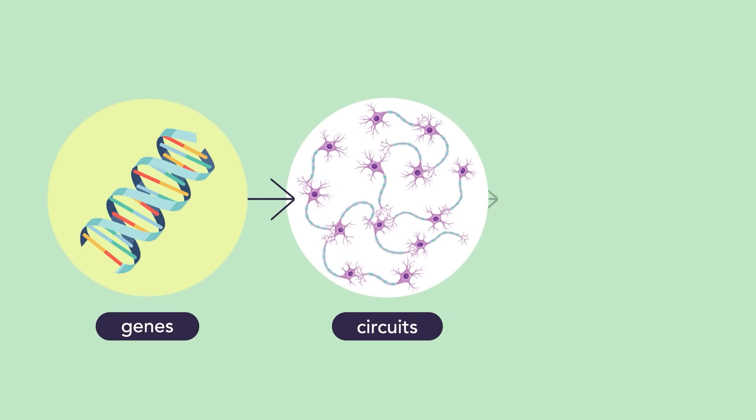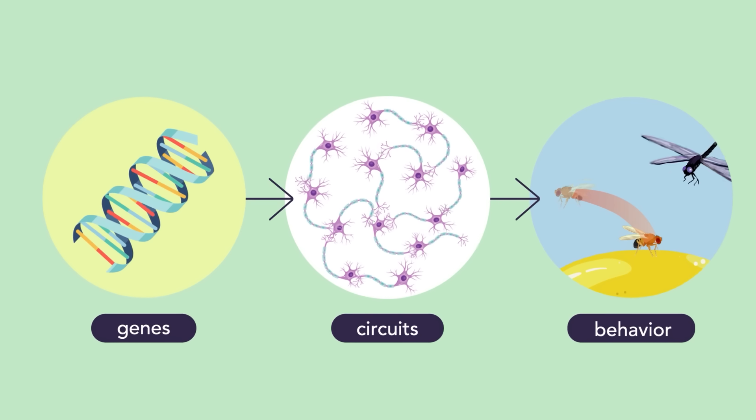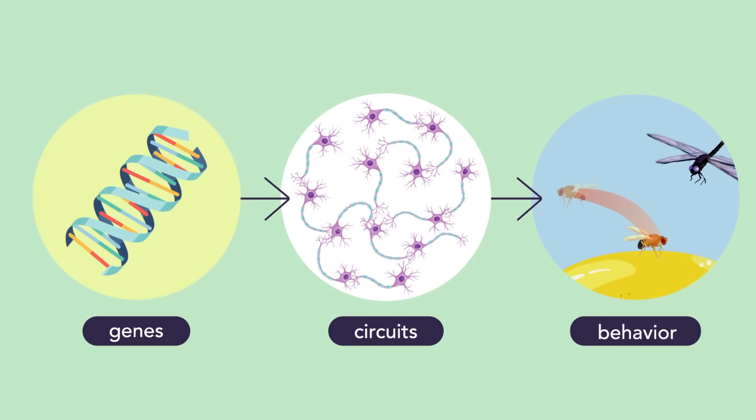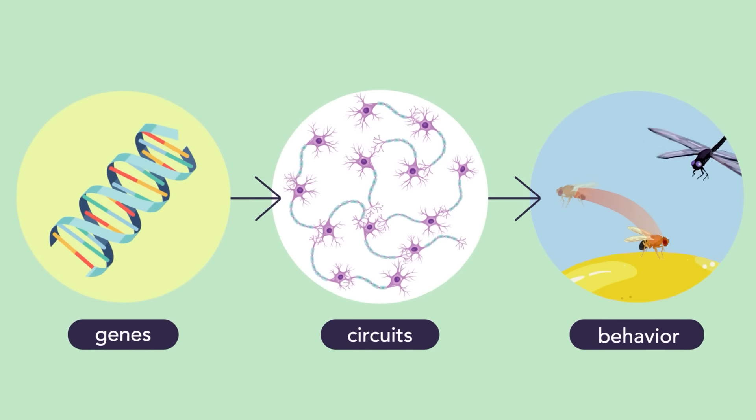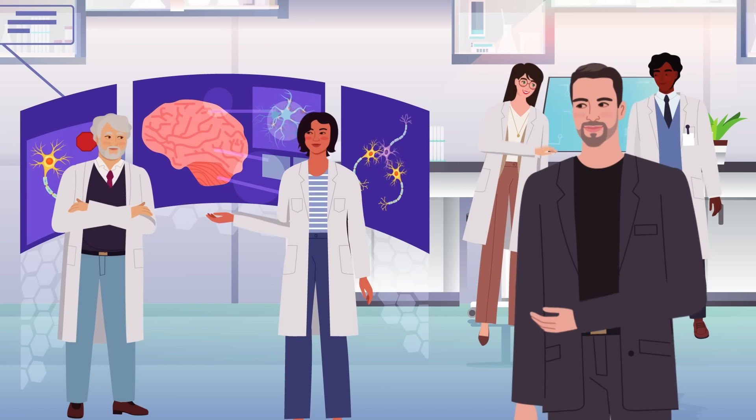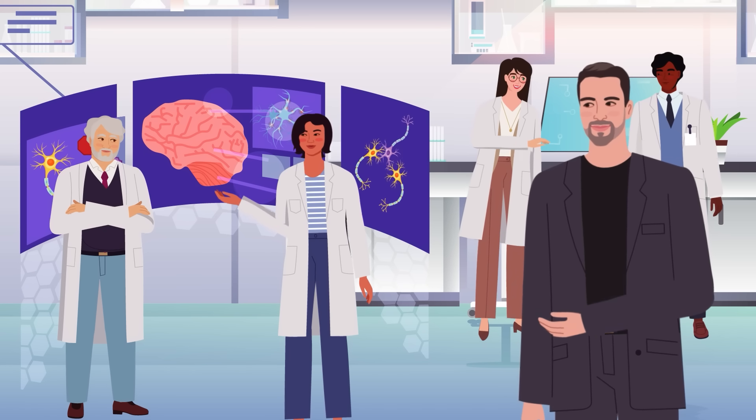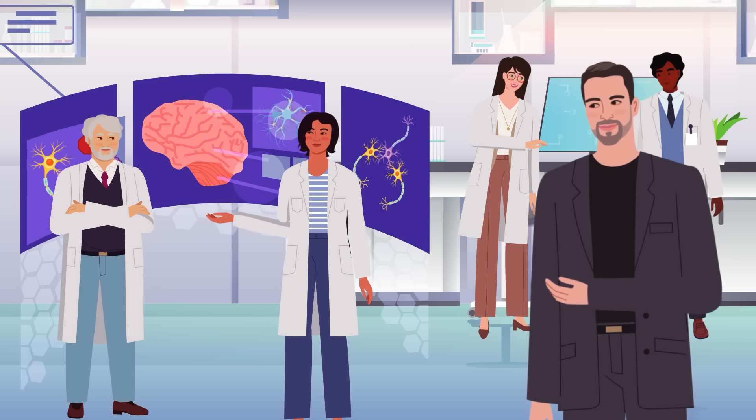These findings highlight a continuity between genes and molecules shaping neuronal connectivity and the precise wiring of behaviorally relevant neural circuits. By uncovering the molecular mechanisms behind neural connections, this work provides insights into how the brain interprets sensory information and executes accurate responses. These discoveries provide a framework for generating predictive models of brain wiring and deepen our understanding of neural connectivity in both health and disease.